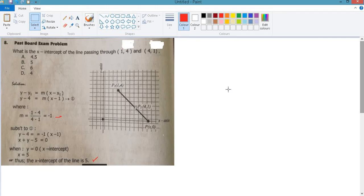Next problem, problem number 8. What is the x-intercept of the line passing through 1,4 and 4,1?